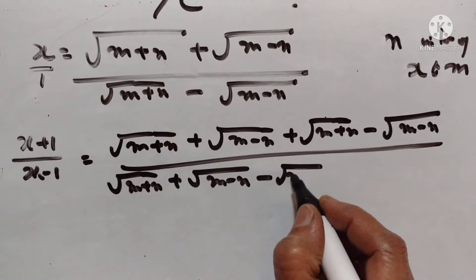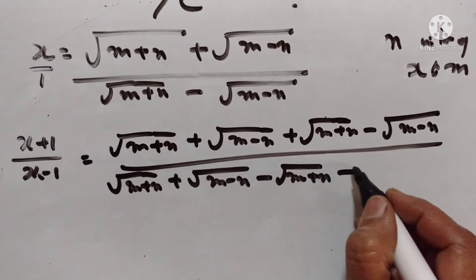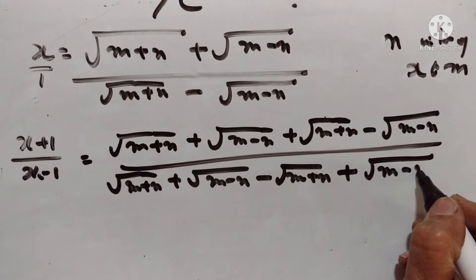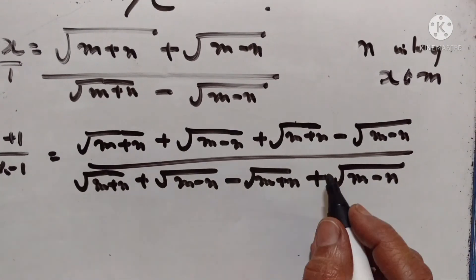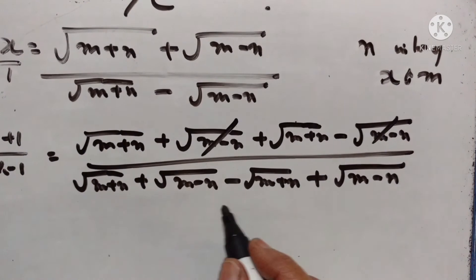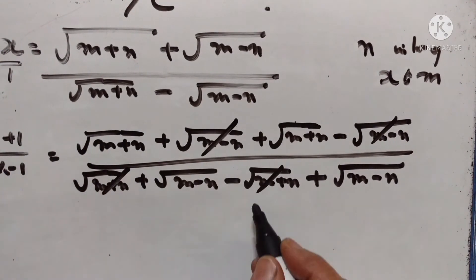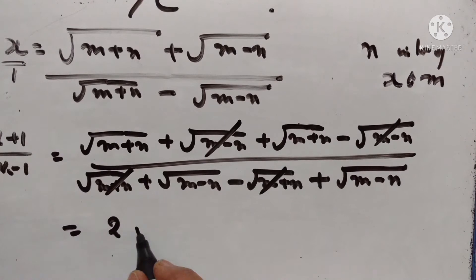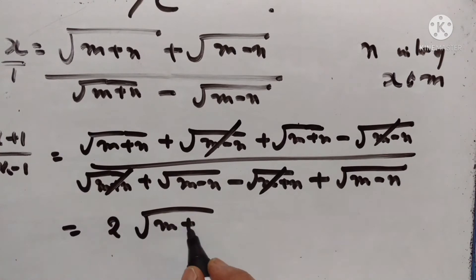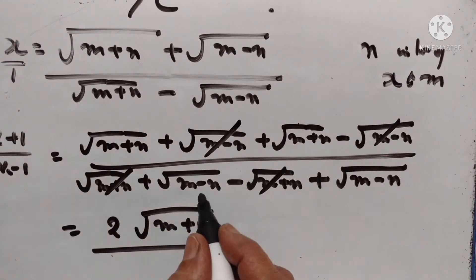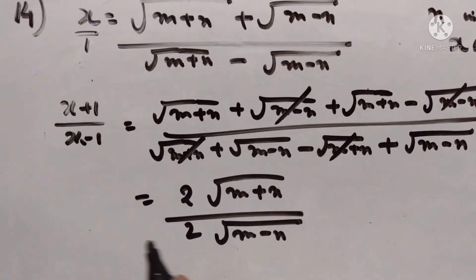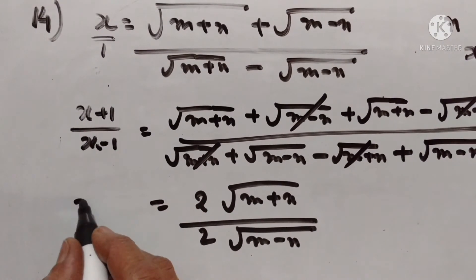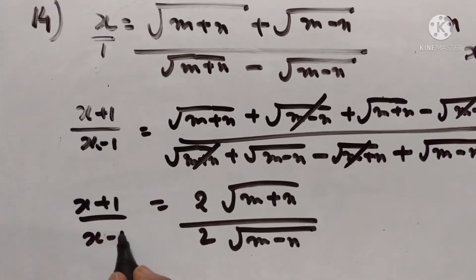Applying componendo dividendo: this plus this upon this minus this gives square root of M plus N plus square root of M minus N upon square root of M plus N minus square root of M minus N, which is equal to x plus 1 upon x minus 1.